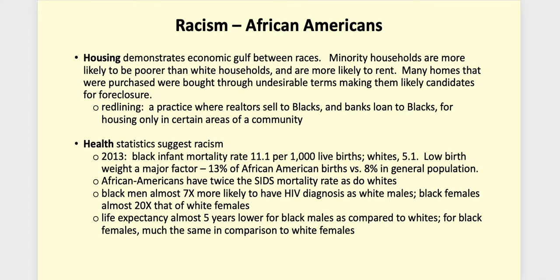Housing is another area where there's a gulf between the races. Minority households are more likely to be poor than white households, so they're more likely to be renters. Those that do buy often buy homes on very unfavorable, predatory terms that make them good candidates for foreclosure. There has been a practice in the real estate and bank lending industry called redlining, where loans are granted or houses are sold only in certain areas of the community, essentially creating segregated neighborhoods.